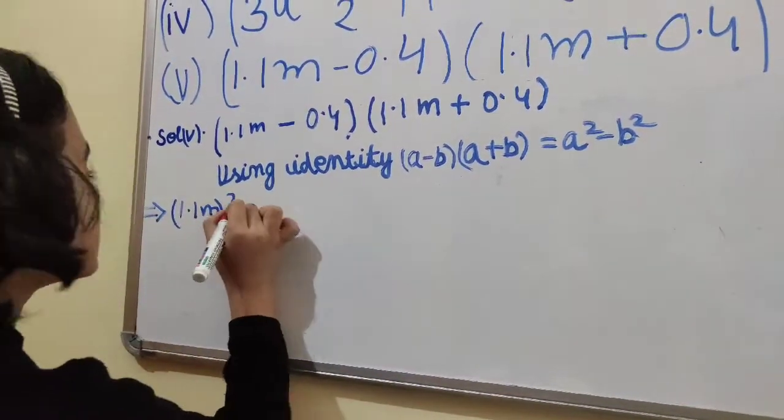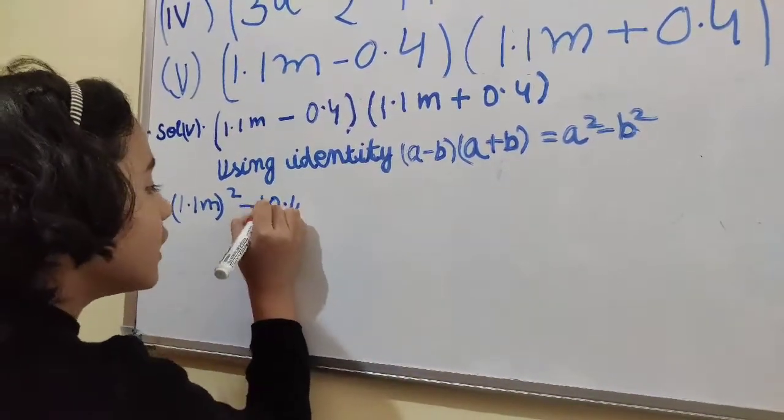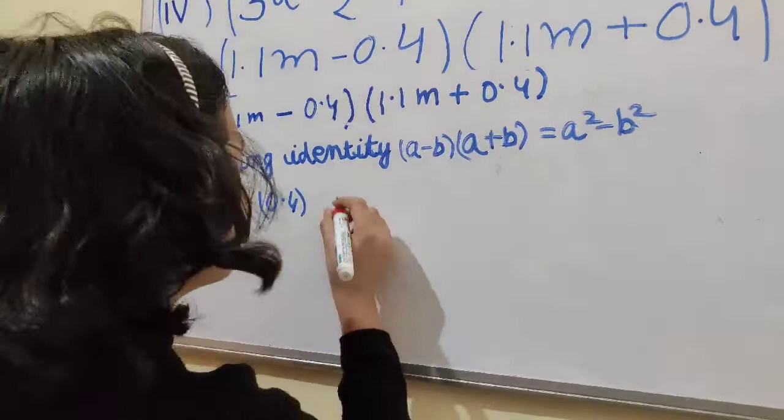Which implies, now we have to follow this identity: (1.1m)² - (0.4)².